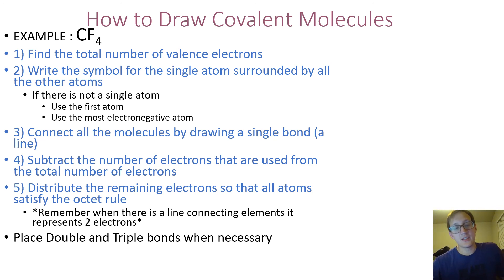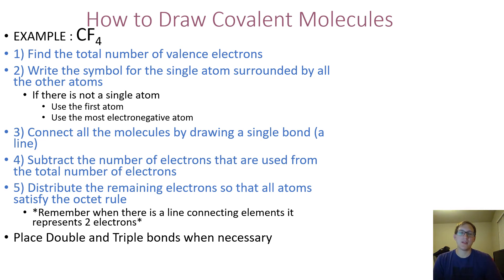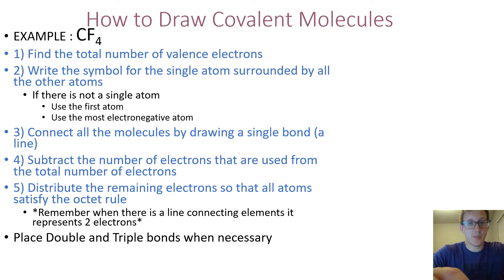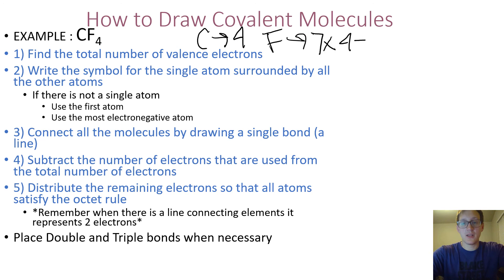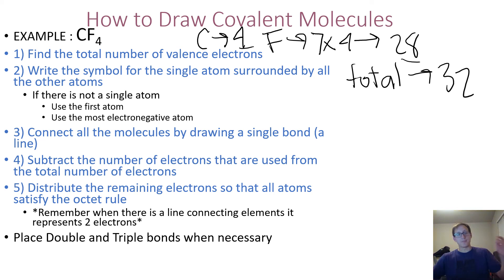The first thing we need to do is find the total number of valence electrons. You can look them up, or remember that the group number tells you how many valence electrons there are. Carbon is in a group with four valence electrons, so carbon has four. Fluorine is in the halogens — they have seven. Since I have four fluorines, I multiply that by four, giving 28. So the total is 28 plus 4, which is 32. I need to place 32 valence electrons on my Lewis dot structure.